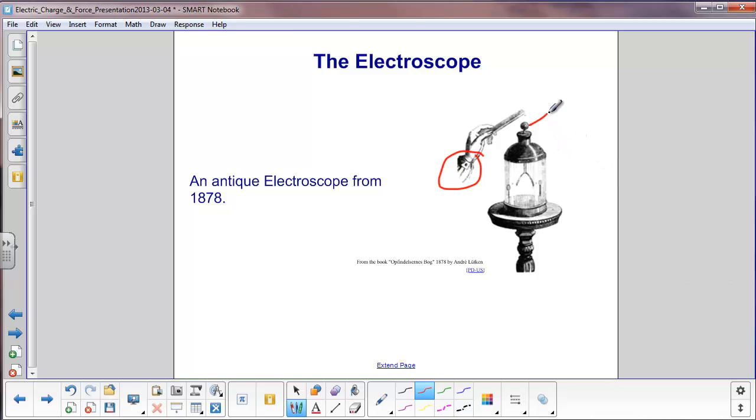You can see here, here's the top of it where they have a little sphere. Here are the two gold leaves. Instead of a beaker-like apparatus they have a tube here and this object right here is a charged rod.